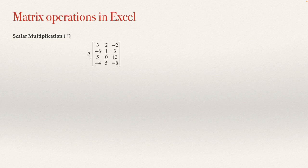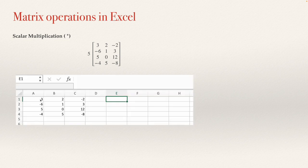For example, if you want to multiply the scalar 5 with a matrix, what you need to do is type that matrix in Excel. Open Excel, and in whatever cell, type the matrix. The columns and the rows need to be consecutive.